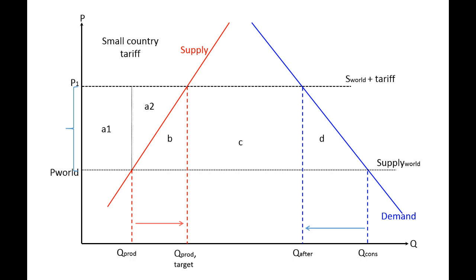When we add everything up, areas A1, A2, and C are positive for producers and/or the government, but are also negative for consumers, so they cancel out to zero. What remains are areas B and D, which are pure losses to consumers with no offsetting gain. These represent the total deadweight loss to society due to the introduction of the tariff.